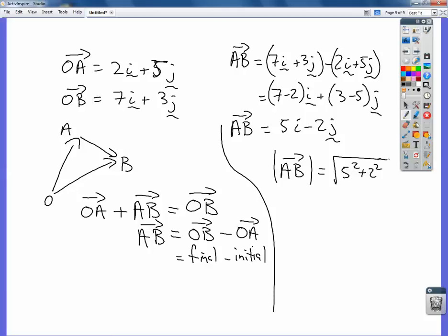The negative doesn't matter because when you square it, it becomes positive anyway. That becomes 25 plus 4, square root of 29. So the length of that vector, or its magnitude, is the square root of 29 units. And that's where we're going to finish with this particular video.